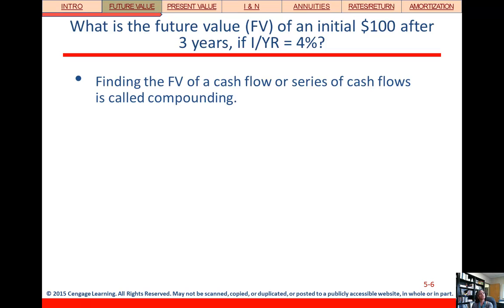So when we're trying to find a future value, we call that compounding. Later on, you'll see if we're trying to find a present value, we're going to call that discounting.